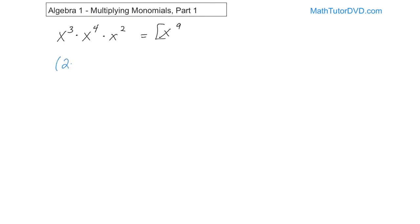What if you have 2x squared and you're multiplying it by 5x squared? Now it's different because you have numbers in front. When you have numbers in front and you're multiplying them, you can always multiply the numbers together. So 2 times 5 is 10. Then you look at the exponents — the bases are the same, so you add the exponents together. It's 10 times x to the 4th power. That is the final answer.